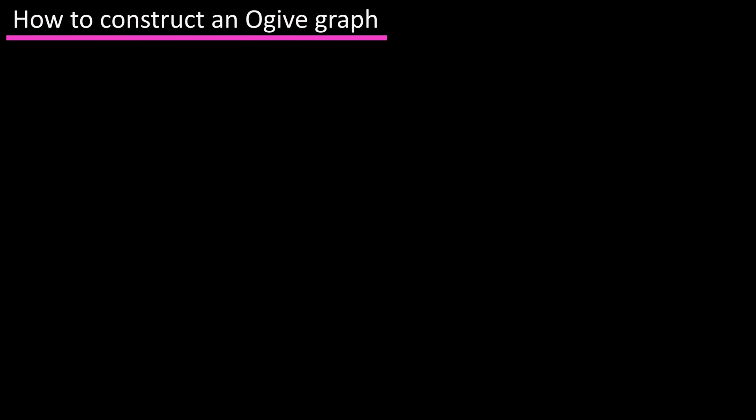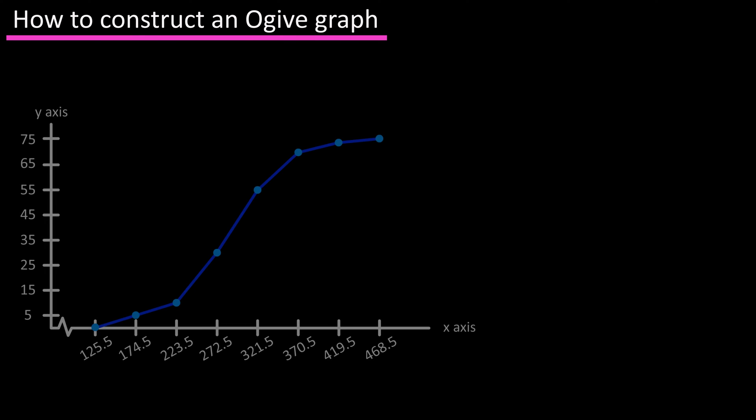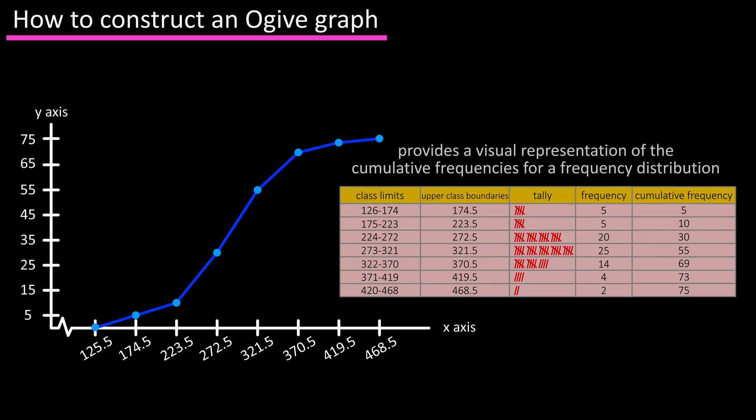In this video we're going to go over how to construct an ogive graph. An ogive is a graph that provides a visual representation and uses a line that connects the cumulative frequencies at the upper class boundaries for the classes in a frequency distribution.